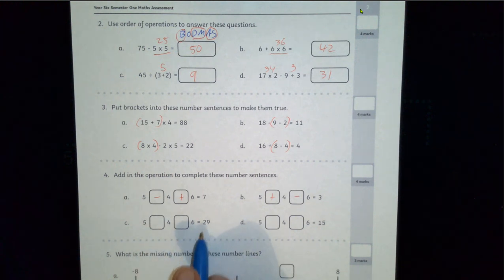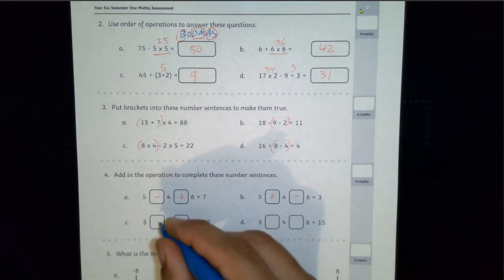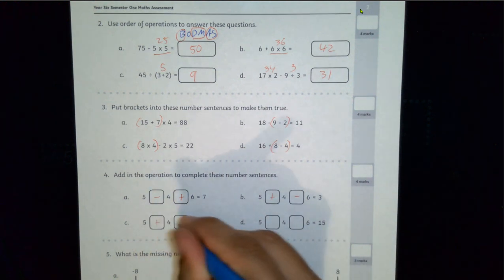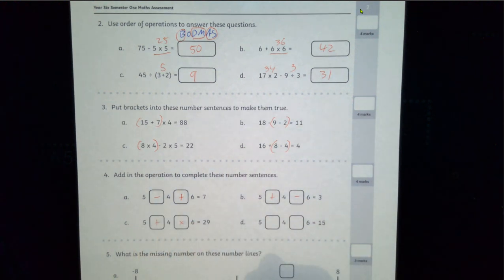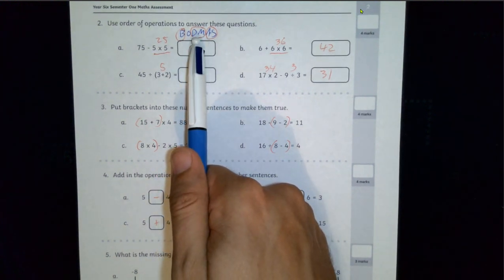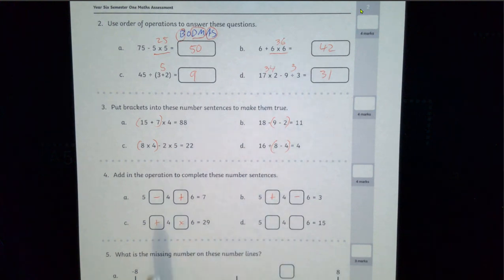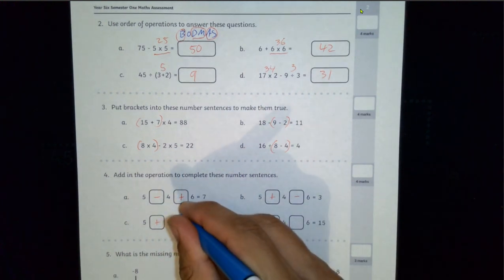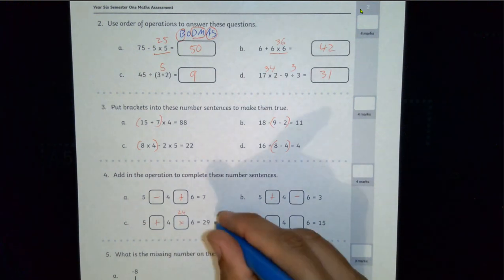We've got to go from 5 to 29. So that's quite an increase. If I do 5 times 4, we'll get 20 plus 6 will still be only 26. Another option could be to add and then multiply. Because if you do that, you've got to do the multiplication part first, as it says in BODMAS. The multiplication comes before the addition and subtraction. 4 times 6 equals 24. 5 plus 24 will get me my 29.